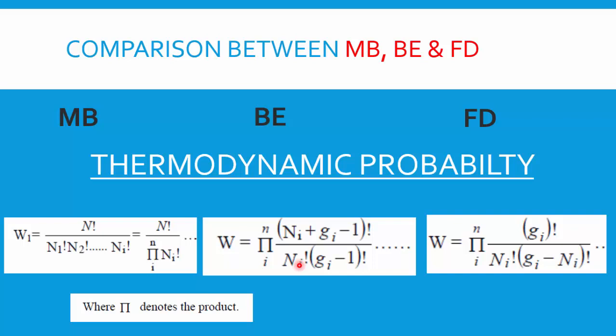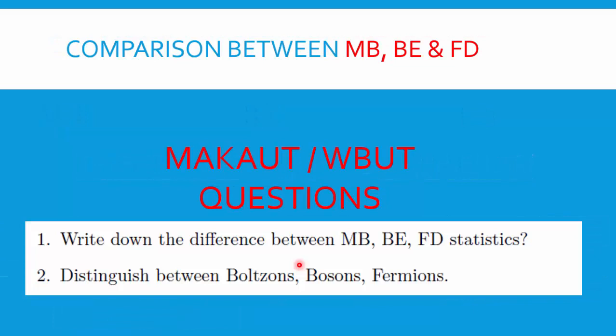To summarize the comparison: we have discussed five points differentiating MB, BE, and FD statistics. First: distinguishable vs indistinguishable particles. Second: Pauli's exclusion principle. Third: spin values. Fourth: distribution function. Fifth: thermodynamic probability. Universities may also ask this question in the form of 'distinguish between bosons and fermions.'